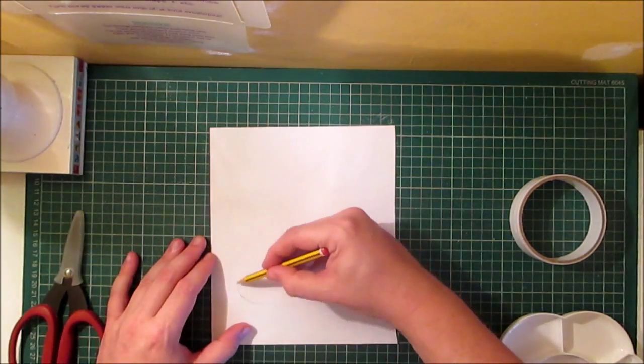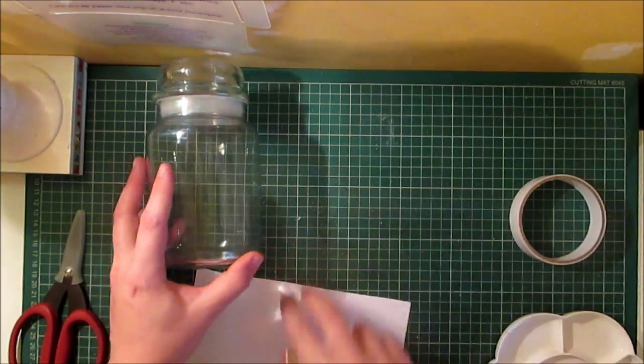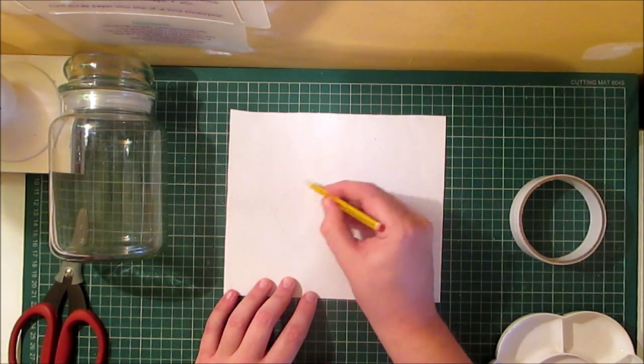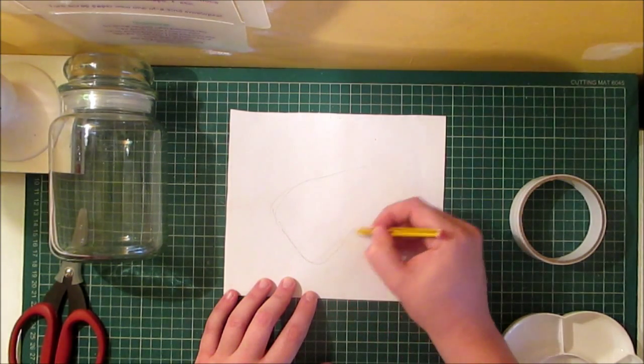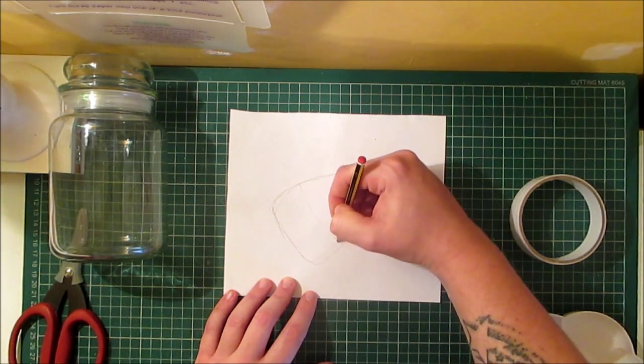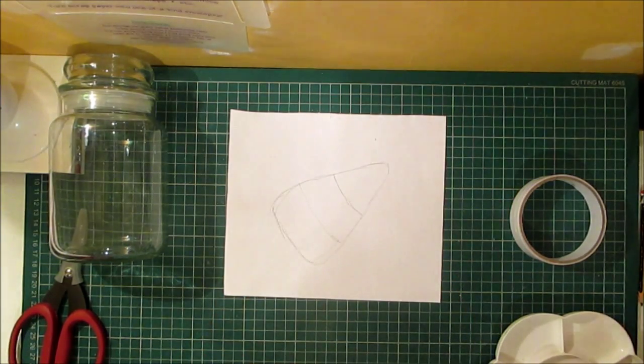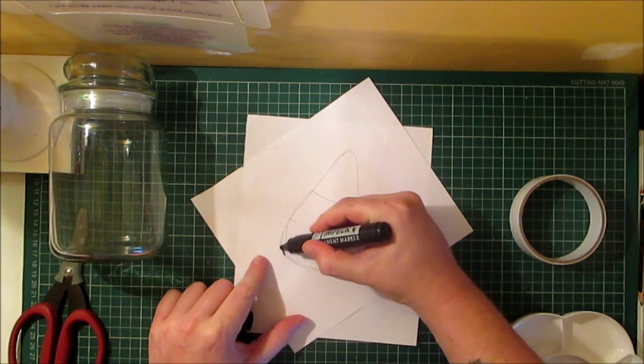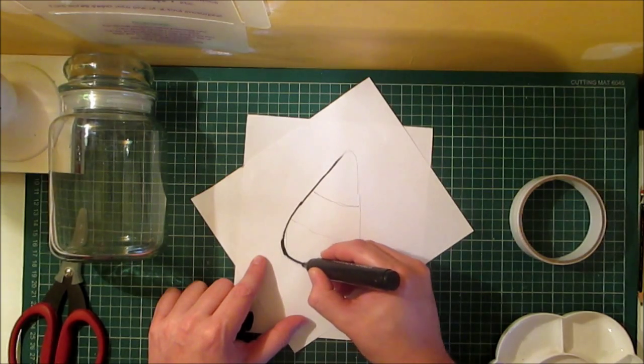I'm just going to freehand the candy corn shape but obviously you need to do it relevant to the size of your glass jar. So that one I just started to draw was slightly too big so I'm just going to freehand a candy corn and then you partition it off. And then using a black marker just do thicker outlines because obviously you want it to be fairly thick for when you cut it out.